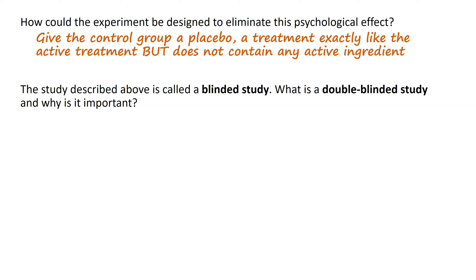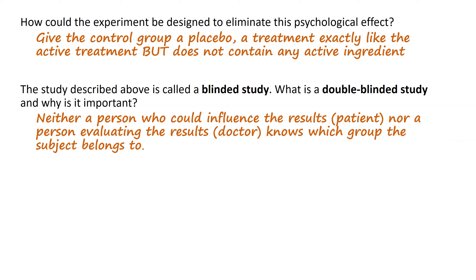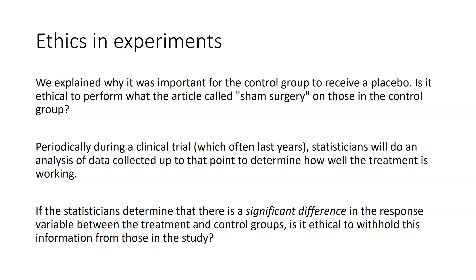Sometimes a double-blinded study is required. A double-blinded study happens when neither the person who could influence the results — the patient — nor the person evaluating the results — the doctor or researcher — knows which group a subject belongs to. Information might be kept in a sealed envelope or tracked by a third party. When delivering and evaluating the treatment, nobody knows if each individual is getting the real treatment or not. Once the study is over, the information is revealed and researchers look for significant differences between the two groups.